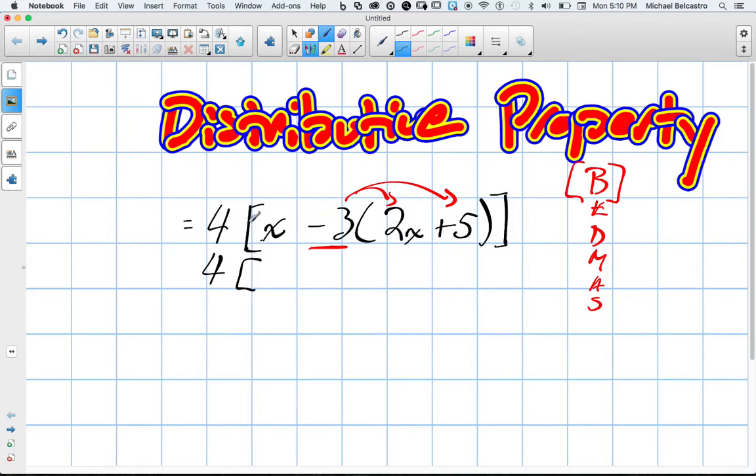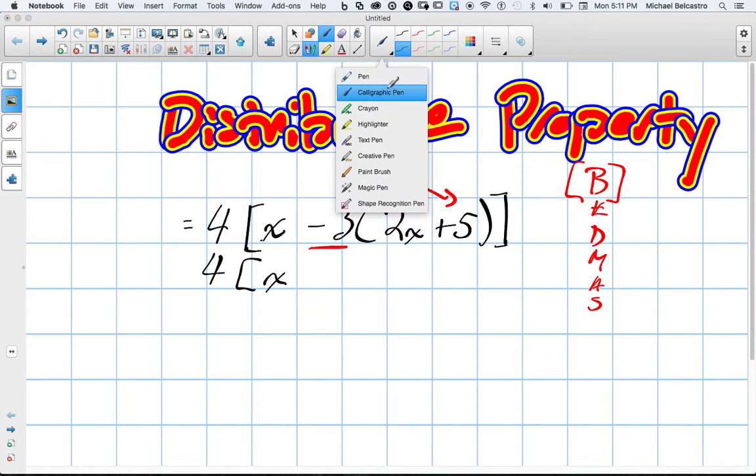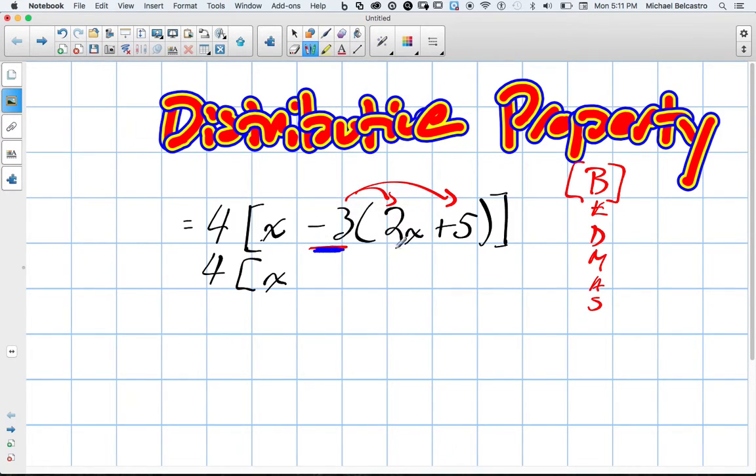So I'll bring everything else down, so the 4 stays the same, square bracket's the same, the x is the same, and now here we go. Negative 3 times 2x. Well, we multiply this constant by this coefficient, so negative 3 times 2 gives us negative 6, and we still keep that x, it does not disappear. And then negative 3 times positive 5, a negative times a positive is a negative, and 3 times 5 is 15, so we have negative 15.